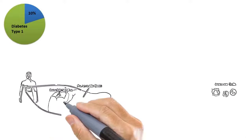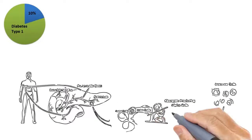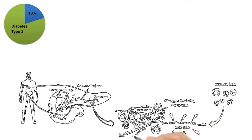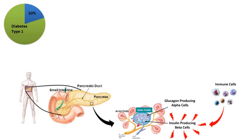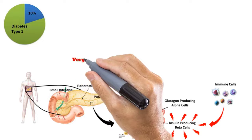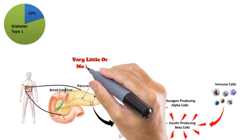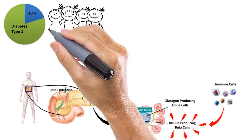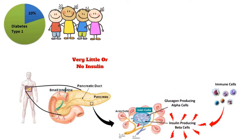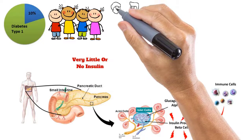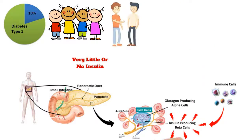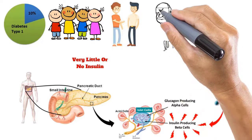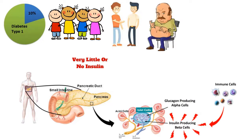Type 1 diabetes is caused by an autoimmune reaction where the body's defense system attacks the cells that produce insulin. As a result, the body produces very little or no insulin. Type 1 diabetes can affect people at any age but usually develops in children or young adults.